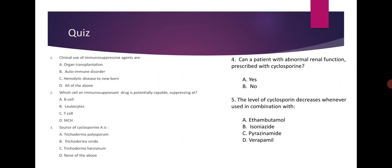Question 3: What is the source of Cyclosporine A? Options: Trichoderma polysporum, Trichoderma viridae, or Trichoderma hazinium. The correct answer is Trichoderma polysporum. Question 4: Can a patient with abnormal renal function be prescribed cyclosporine? No — in a condition of abnormal renal function, the patient cannot be prescribed cyclosporine.